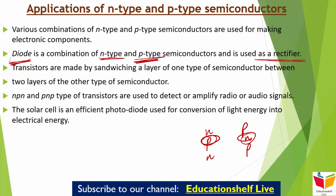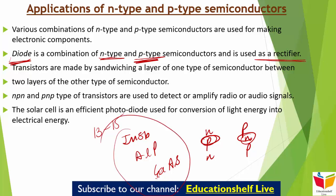The typical compounds of group 13-15 combination are InSb, AlP, and GaAs। जो gallium arsenide जैसे semiconductors होते हैं, इनका बहुत fast response होता है, और इनकी वजह से semiconductor devices की design काफी revolutionize भी हुई है। Now ZnS, CdS, CdSe, and HgTe are the examples of 12-16 group combination। ये हैं वो सारे compounds जो group 12 और 16 के combination से बनते हैं।